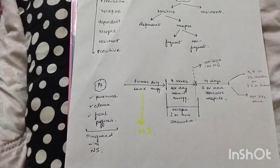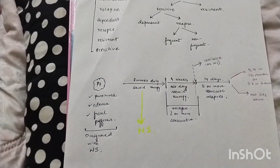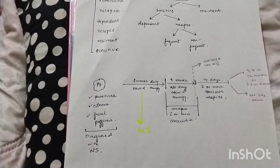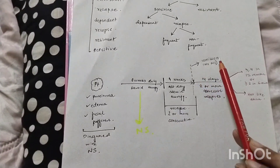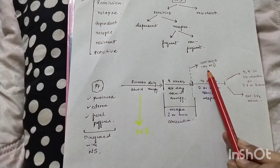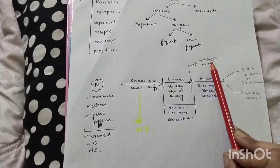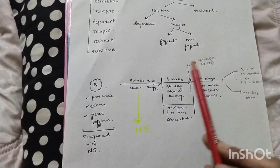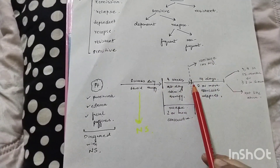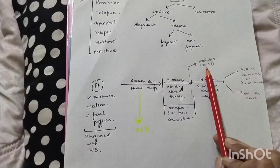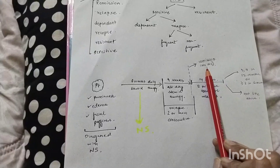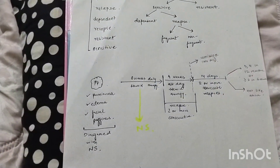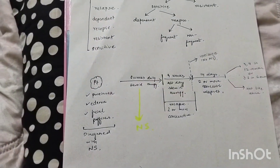What is the first possibility? The first possibility is that the disease is cured — there is no nephrotic syndrome now. That means the patient has gone into remission, which means that after giving a full course of steroid therapy, there are no features of nephrotic syndrome. The patient has gone into remission.